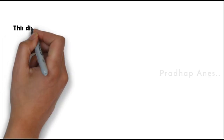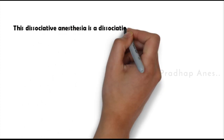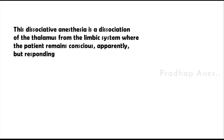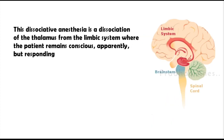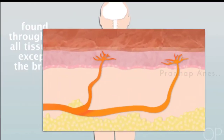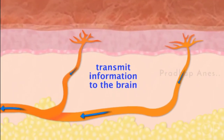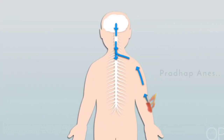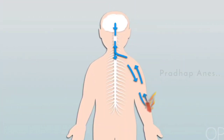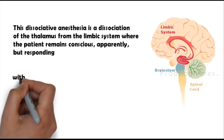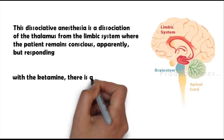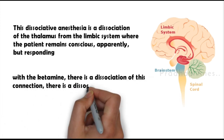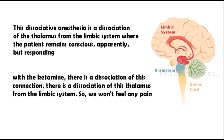This dissociative anesthesia involves a dissociation of the thalamus from the limbic system where the patient remains conscious apparently but unresponsive. Nerve processes travel via the spinal cord to the brain stem, then to the thalamus, and on to the cerebral cortex causing pain. With ketamine, this thalamo-limbic connection is dissociated, so you won't feel any pain.